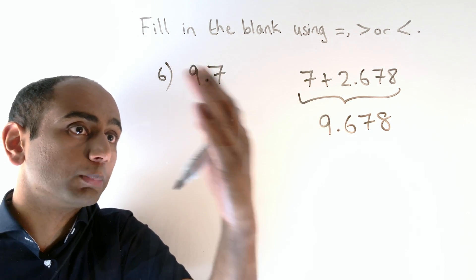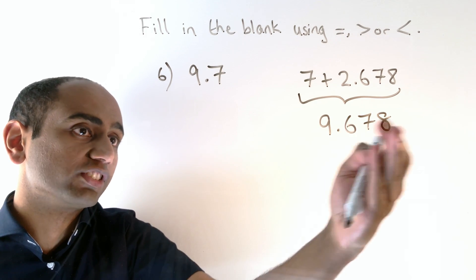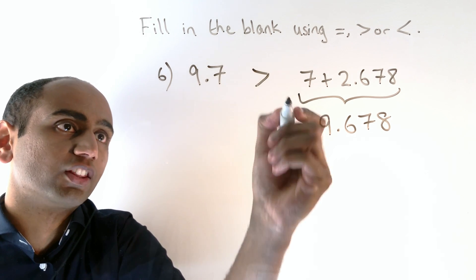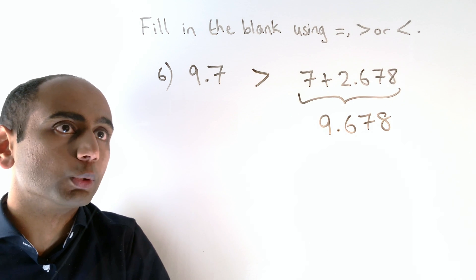We've got 9 units in both cases, but 9.7 has got 7 tenths, whereas this number here has only got 6 tenths. So 9.7 is greater than 7 plus 2.678. That's the symbol we want to use here.